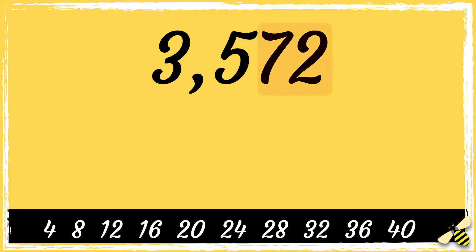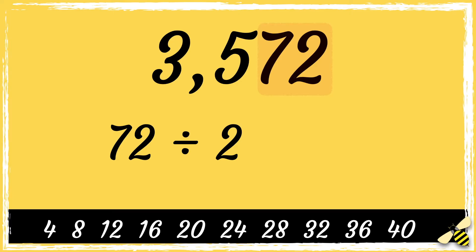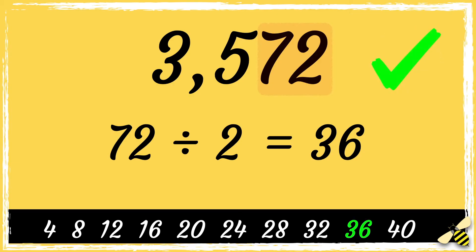Next we have 3572. Remember, we only look at the last two digits. If you're not sure if the last two digits are a multiple of four, you could half it and then see if it's a multiple of four. So half of 72 is 36, and 36 is a multiple of four, so that means that this number is divisible by four.